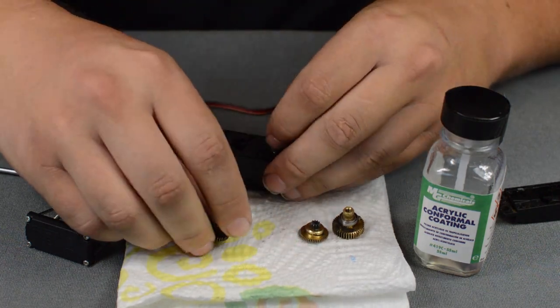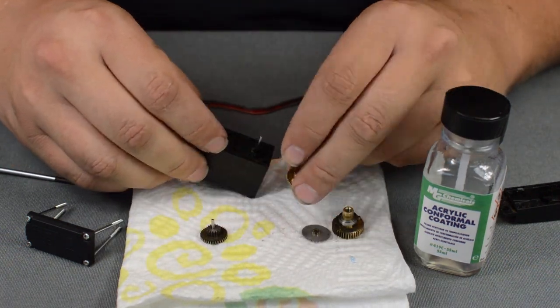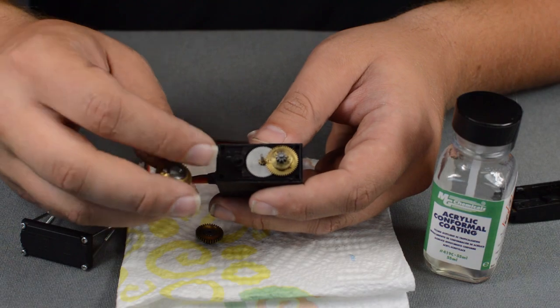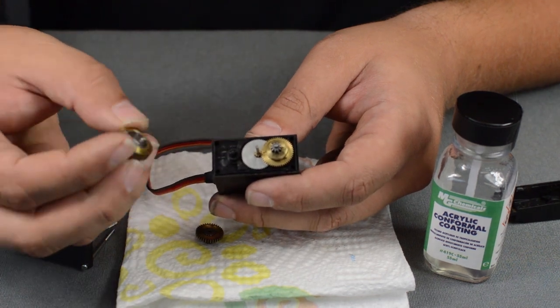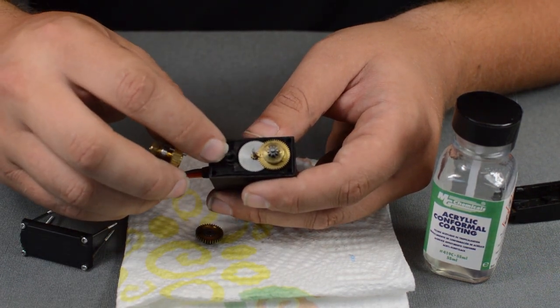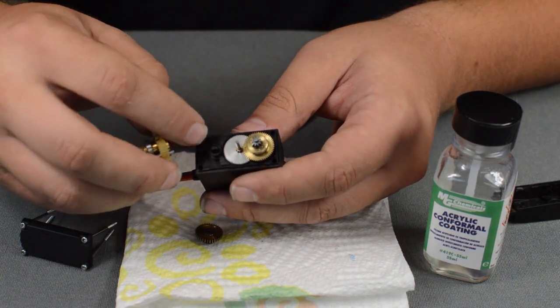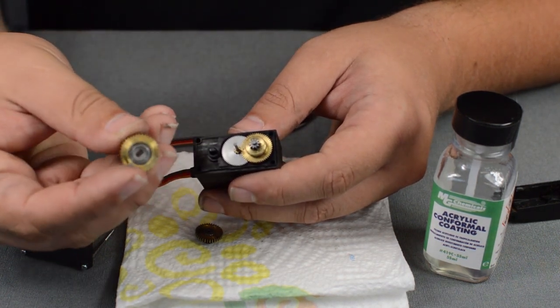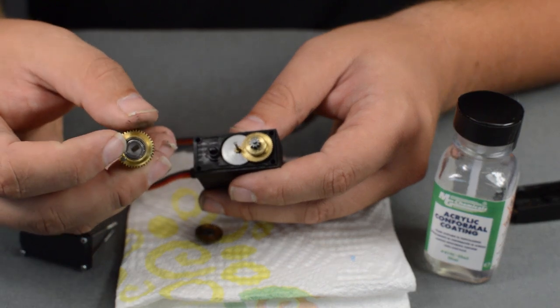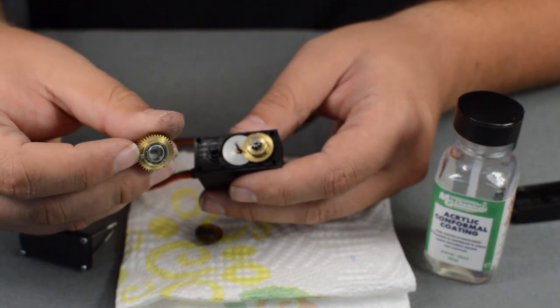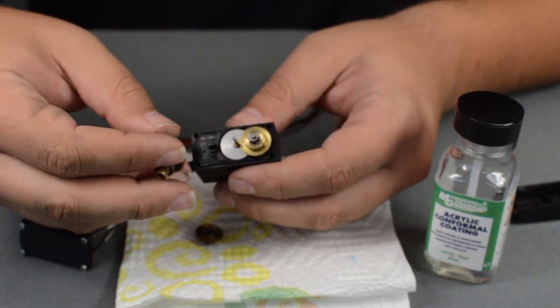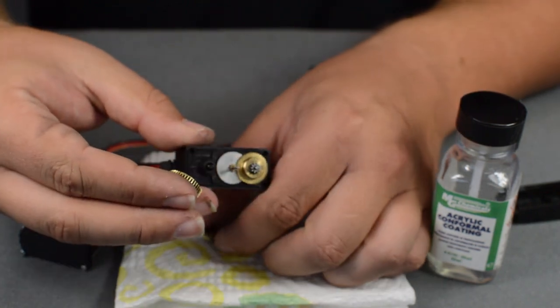And then you get to put the servo back together. All right, so when you go to put the gear set back together, this has two flat spots on it. That's what you're going to want to line up with here. You have a little nub, so you just have to make sure that all slides in.